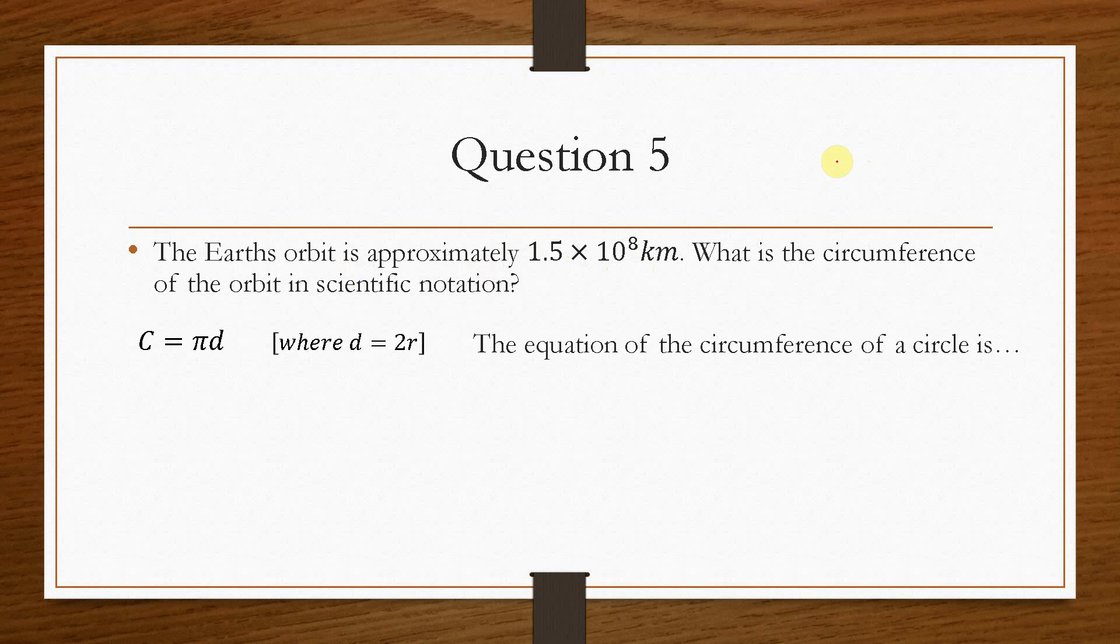So the orbit tells us essentially the circumference. So the circumference being, imagine that's the Sun there, then the Earth's orbit is something like this. So you can think about it as a kind of circle. So we know here that d, so the diameter, is equal to 2 multiplied by the radius. Now we know that because this is at the orbit, so this is essentially the radius of the Earth to the Sun. That distance there is 1.5 times 10 to the 8. So that's our radius. So we simply replace r with 1.5 times 10 to the power 8, multiply it by 2, and then multiply it by pi.